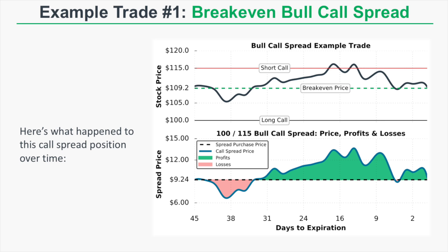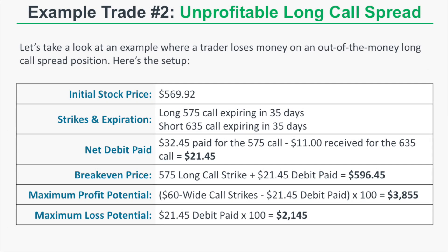At expiration, the stock price was trading right around the break-even price of $109.24, so the long call spread was worth approximately $9.24. The 115 short call expired worthless, but the 100 long call was worth around $9.24. Since that net spread value equaled the purchase price, the spread broke even. Keep in mind the trader could have locked in profits early when the stock was above the short call strike. To close a bull call spread before expiration, simply sell the long call and buy back the short call in the same transaction.